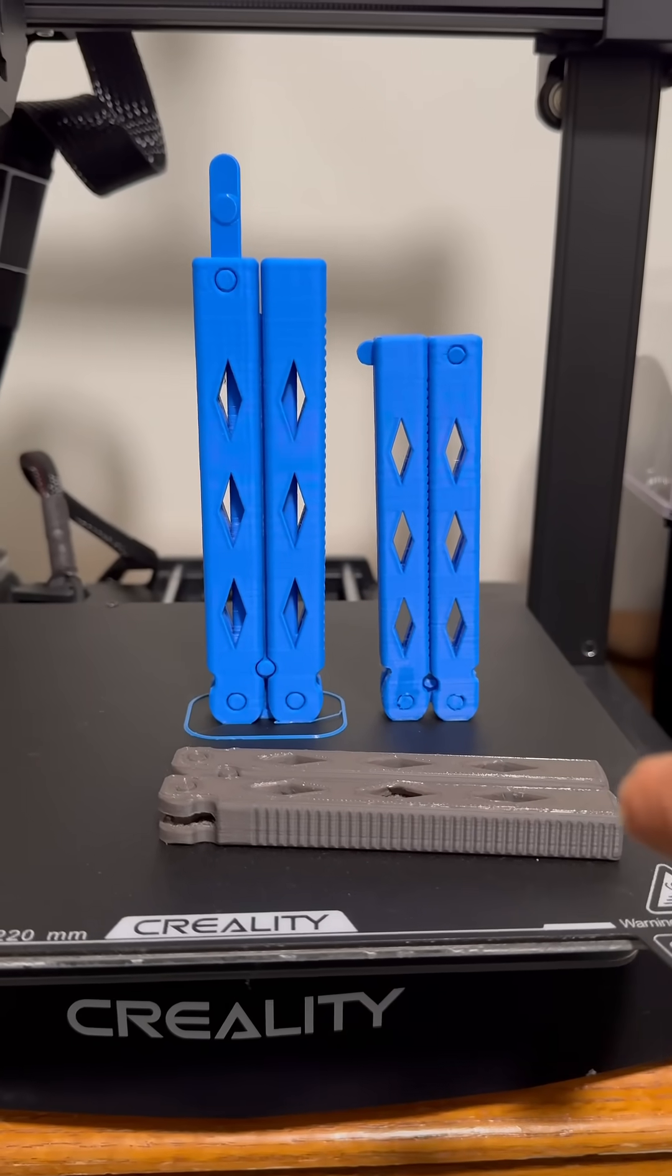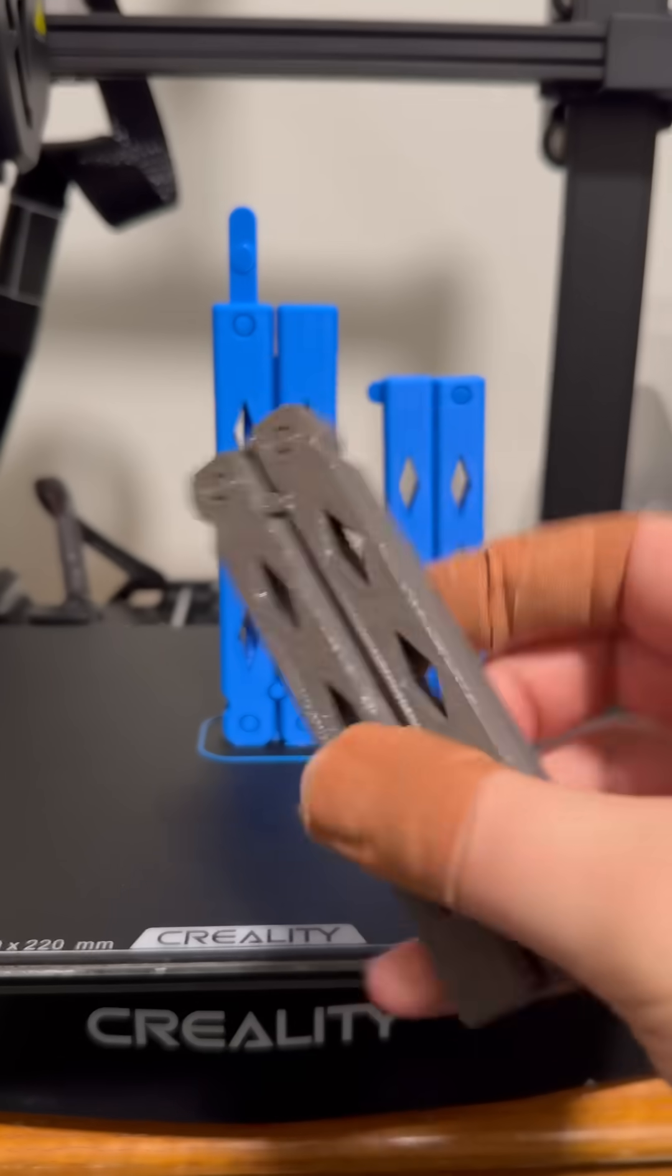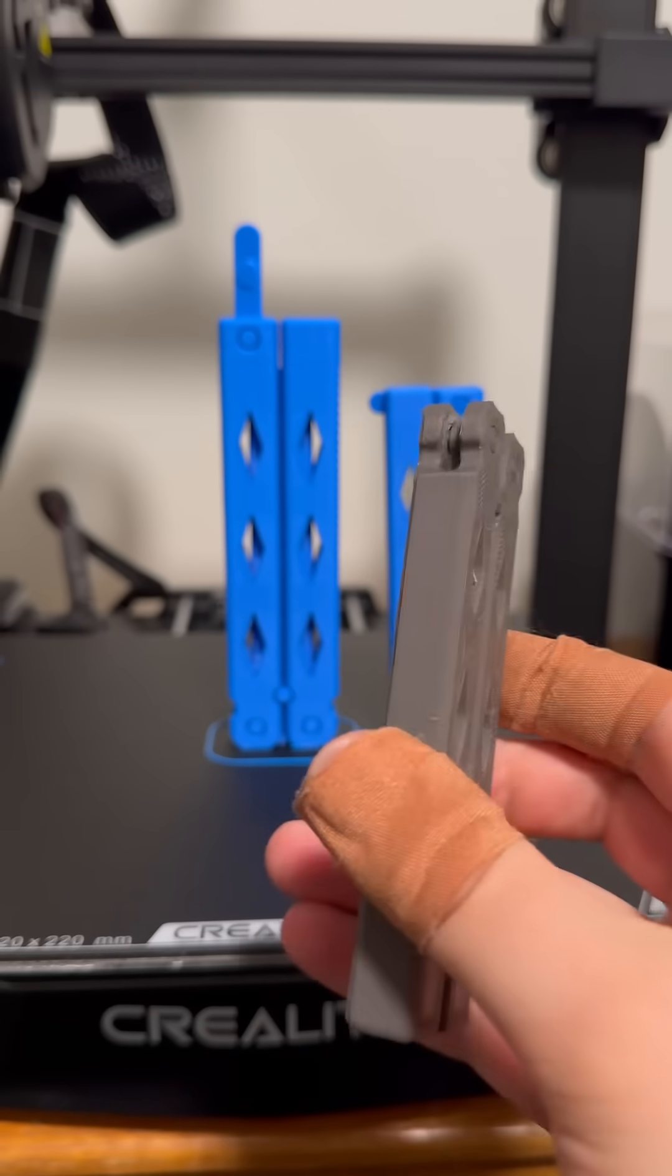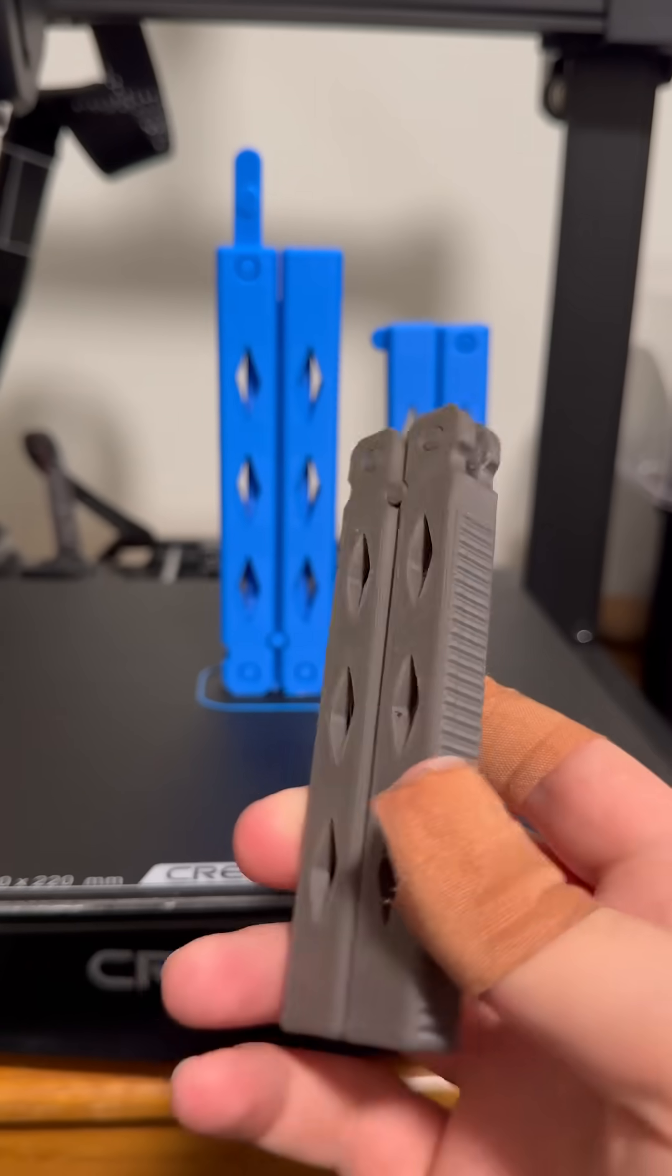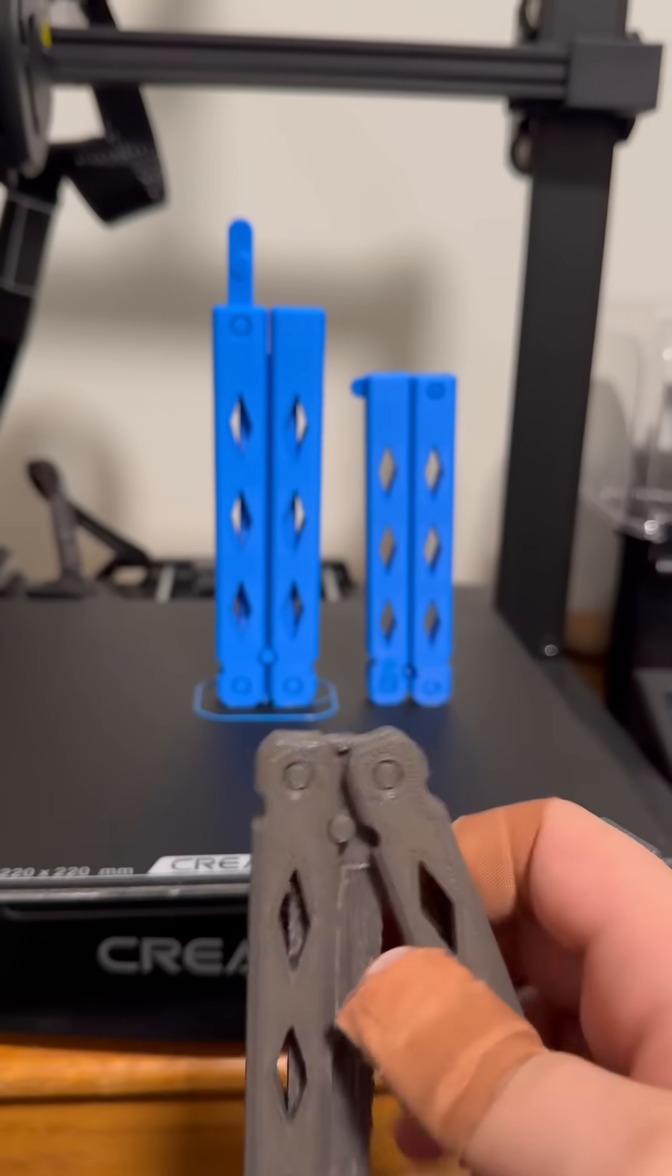This one was printed like this. 10% infill, 200% speed, and it was also printed with supports, which is unnecessary, and it looks like this.